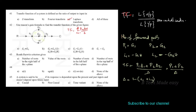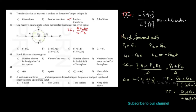So delta is 1 minus (L1 plus L2). The transfer function equals (G1 plus G2) divided by 1 minus (minus G1·H minus G2·H), which simplifies to G1 plus G2 over 1 plus G1·H plus G2·H.